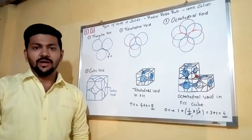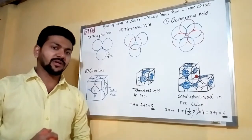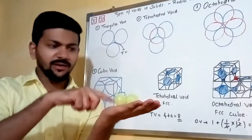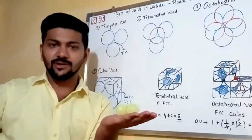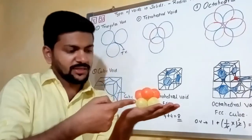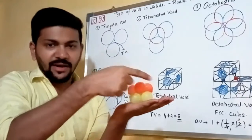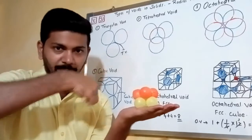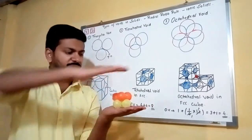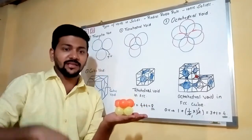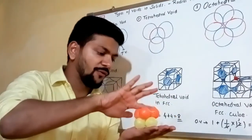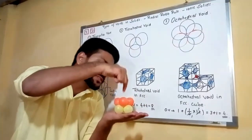Next is the octahedral void. It is formed from two layers: a first layer of three particles arranged in a triangular manner, and a second layer arranged in the opposite orientation. The void produced inside is called an octahedral void. It is called 'octa' because it has eight faces — one at the top, one at the bottom, and six surrounding faces.